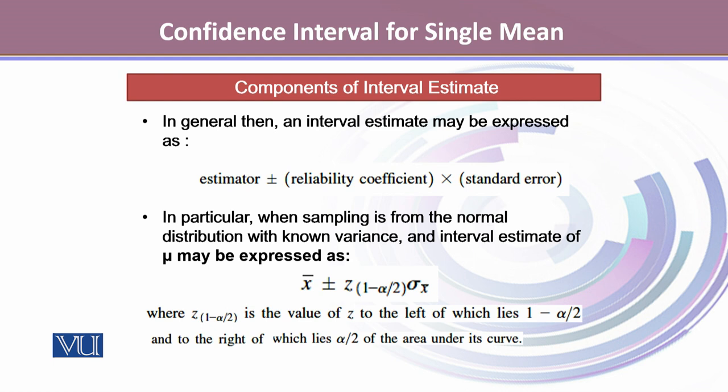where Z_(1-α/2) is the Z value with (1-α/2) area to its left and α/2 area to its right under the curve.